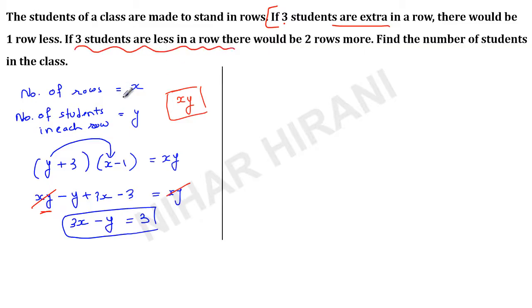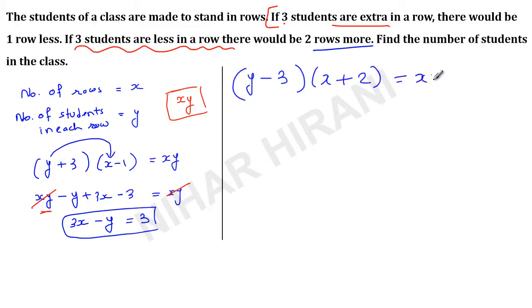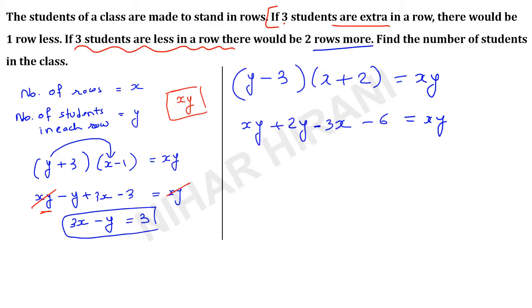Now for the second statement: if 3 students are less in a row, there will be 2 rows more. So the number of students per row becomes y minus 3, and the number of rows becomes x plus 2. Total students remain xy. Expanding (y − 3)(x + 2) = xy gives: xy + 2y − 3x − 6 = xy. Cancelling xy, we get minus 3x plus 2y equals 6. This is equation 2.